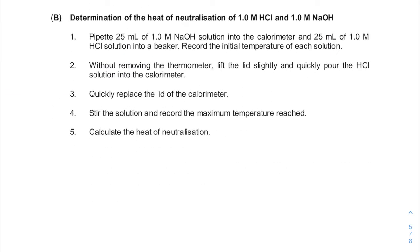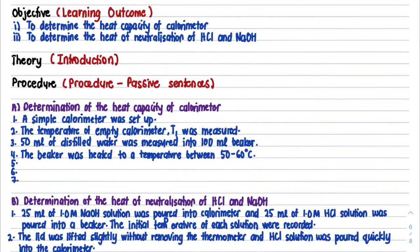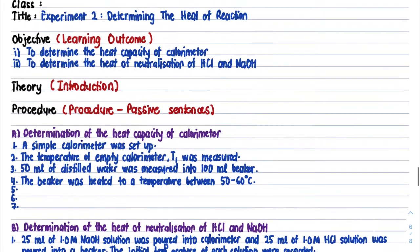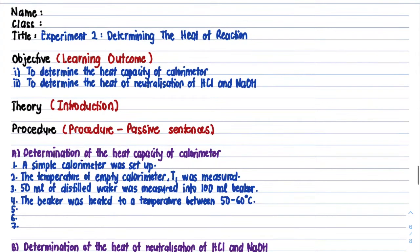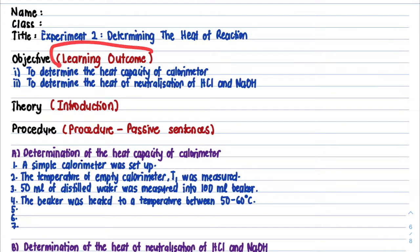For the lab report, what you have to include in the report itself: first, you have to include your name, class and the title. The next part that you have to include is the objective. The objective is basically based upon the learning outcome from your lab manual.